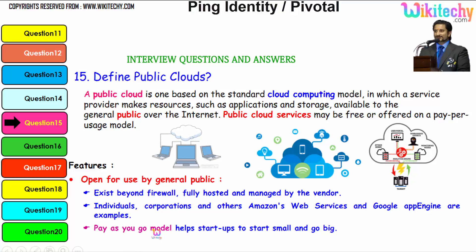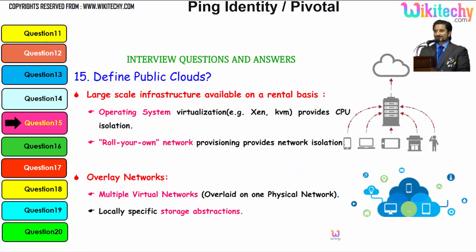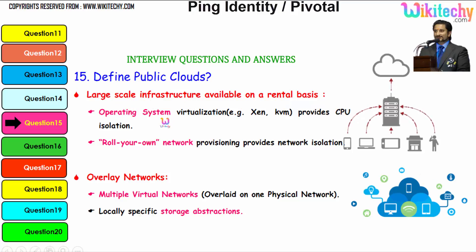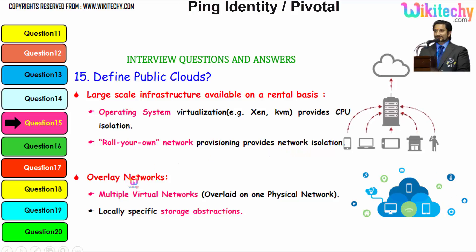A pay-as-you-go model helps startups to start small and go big. The public cloud is a large-scale infrastructure available on a rental basis. Virtual machines like XenVM and KVM are typical examples and provide CPU isolation. Roll-your-own network provisioning provides network isolation. Overlay networks give you multiple virtual networks overlaid on one physical network, along with locally specific storage abstractions.